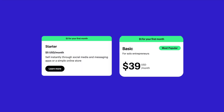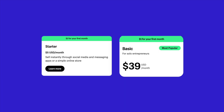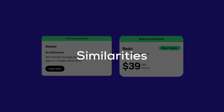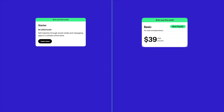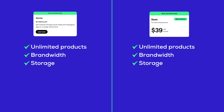Now, let's focus on the Shopify plans we're talking about today: Starter and Basic. We'll break down what they have in common and where they differ. For similarities, both plans offer unlimited products, bandwidth, and storage, ensuring that your store can grow without worrying about hitting limits.